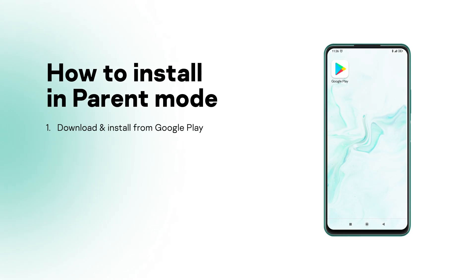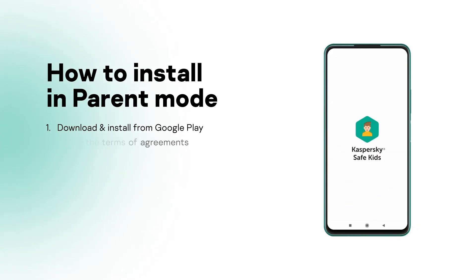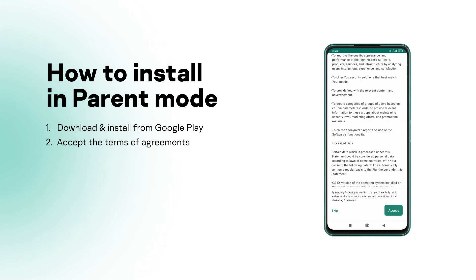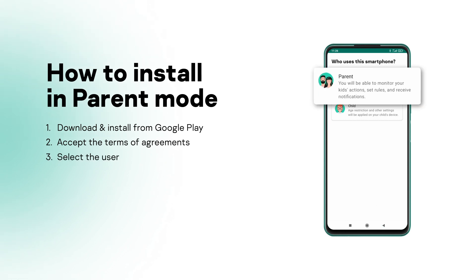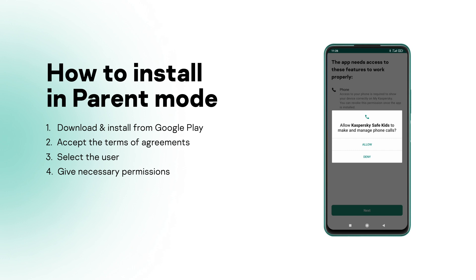From your mobile, go to Google Play and find and install the Kaspersky Safe Kids app. Run the app and accept the terms of the user agreement, privacy policy, and the marketing statement. Select the smartphone user.